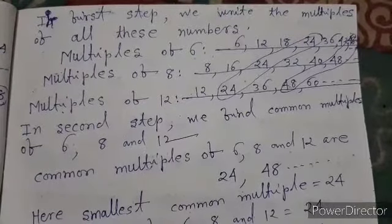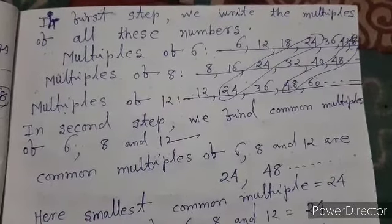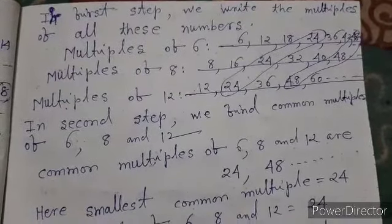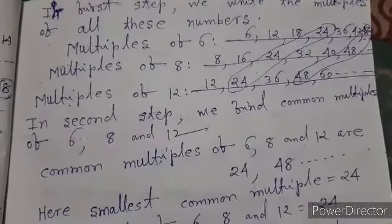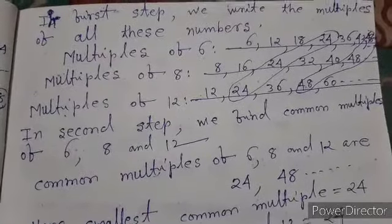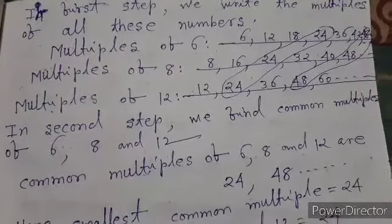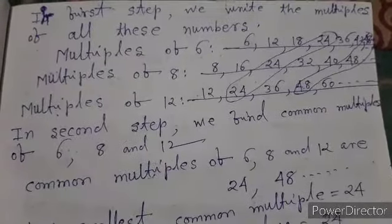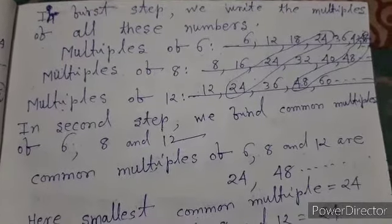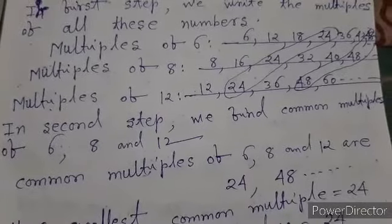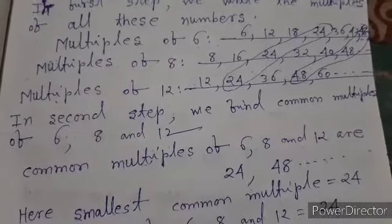In the first step, we write the multiples of all these numbers. Multiples of six are: six, twelve, eighteen, twenty-four, and so on. Multiples of eight are: eight, sixteen, twenty-four, thirty-two, forty, forty-eight, etc. Multiples of twelve are: twelve, twenty-four, thirty-six, forty-eight, sixty, and so on.